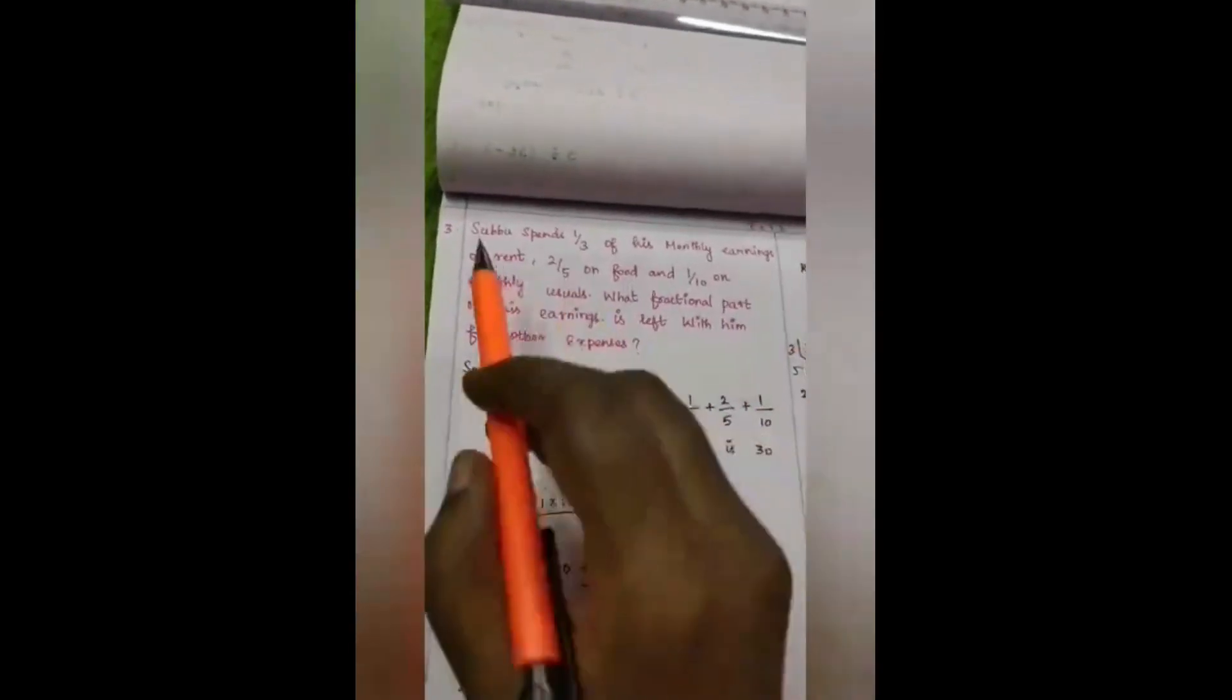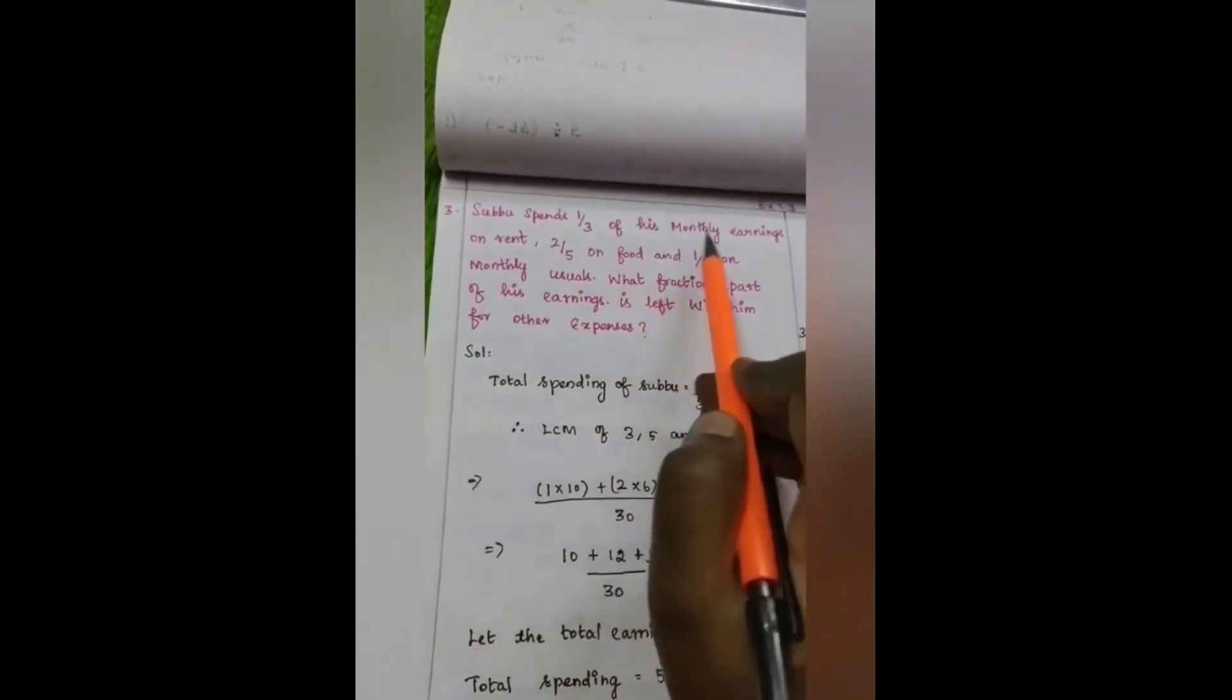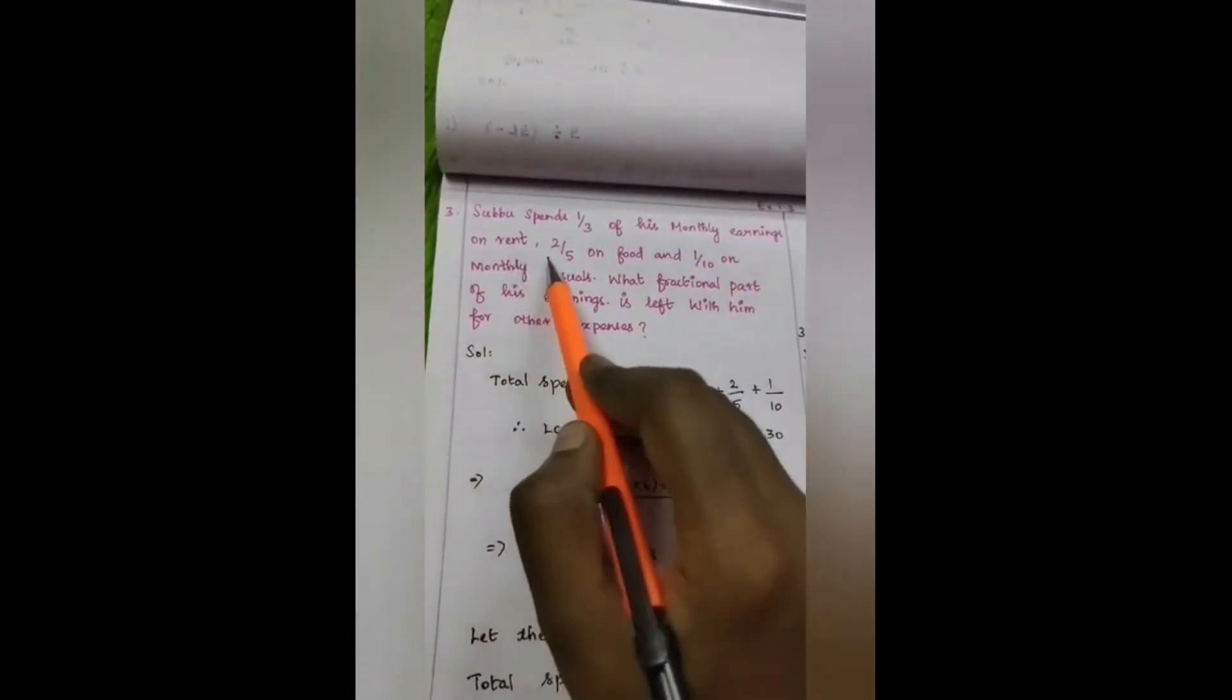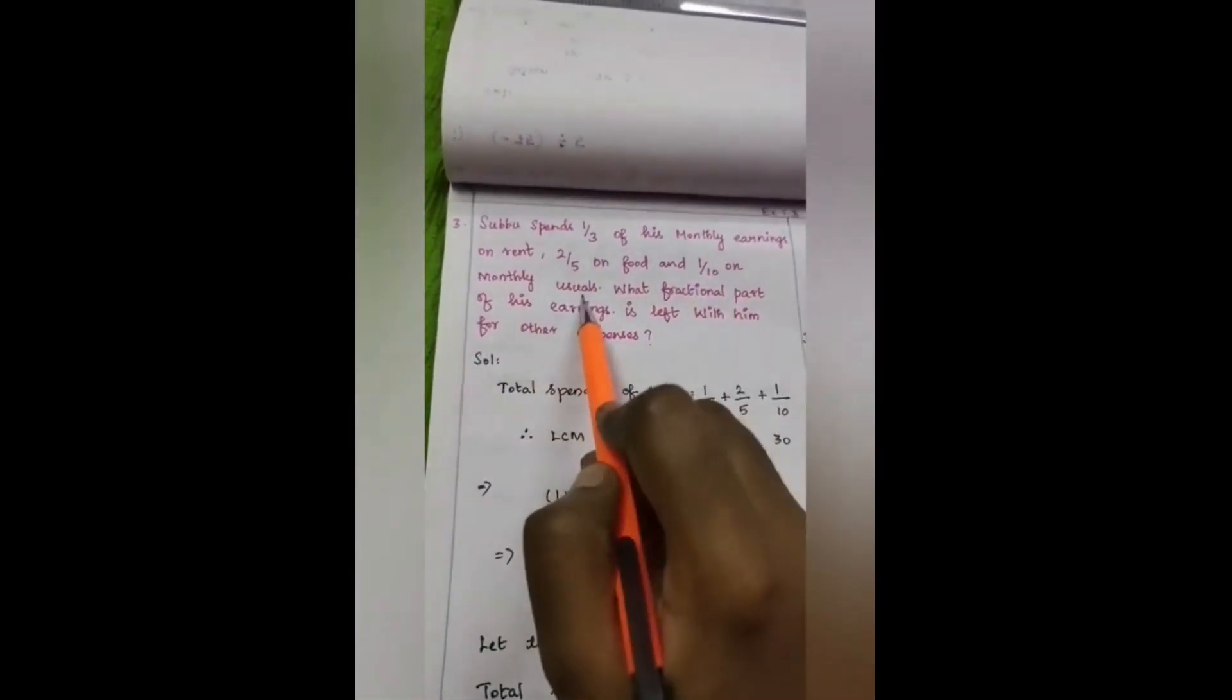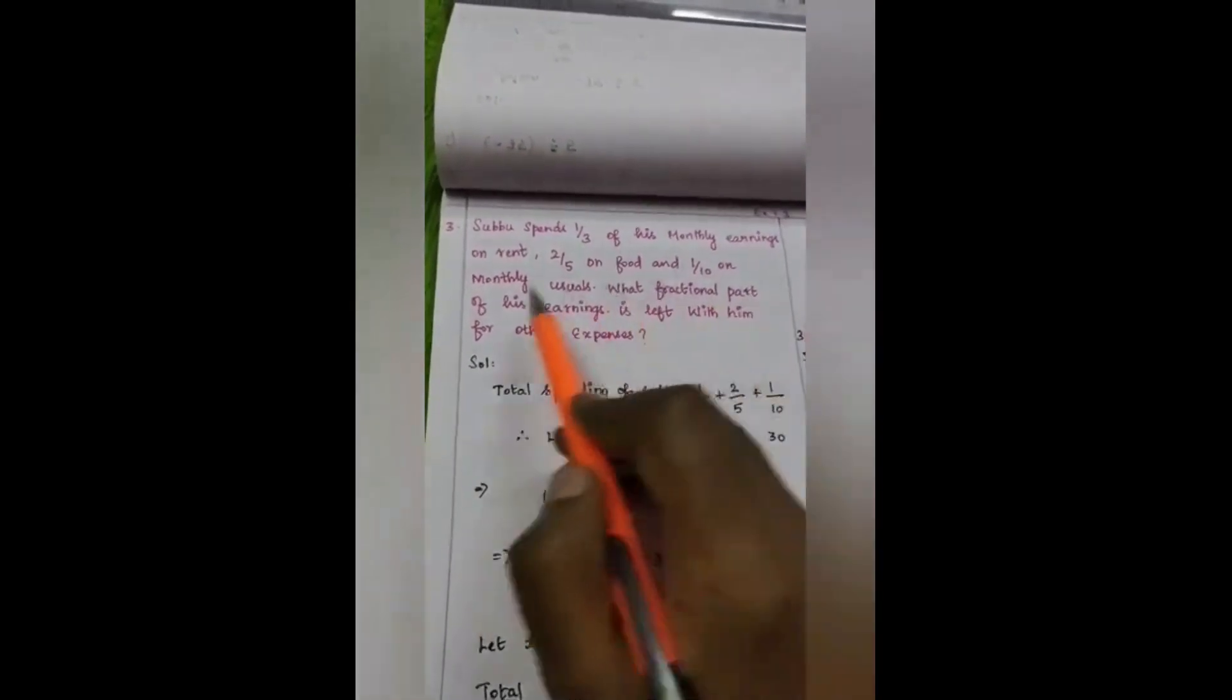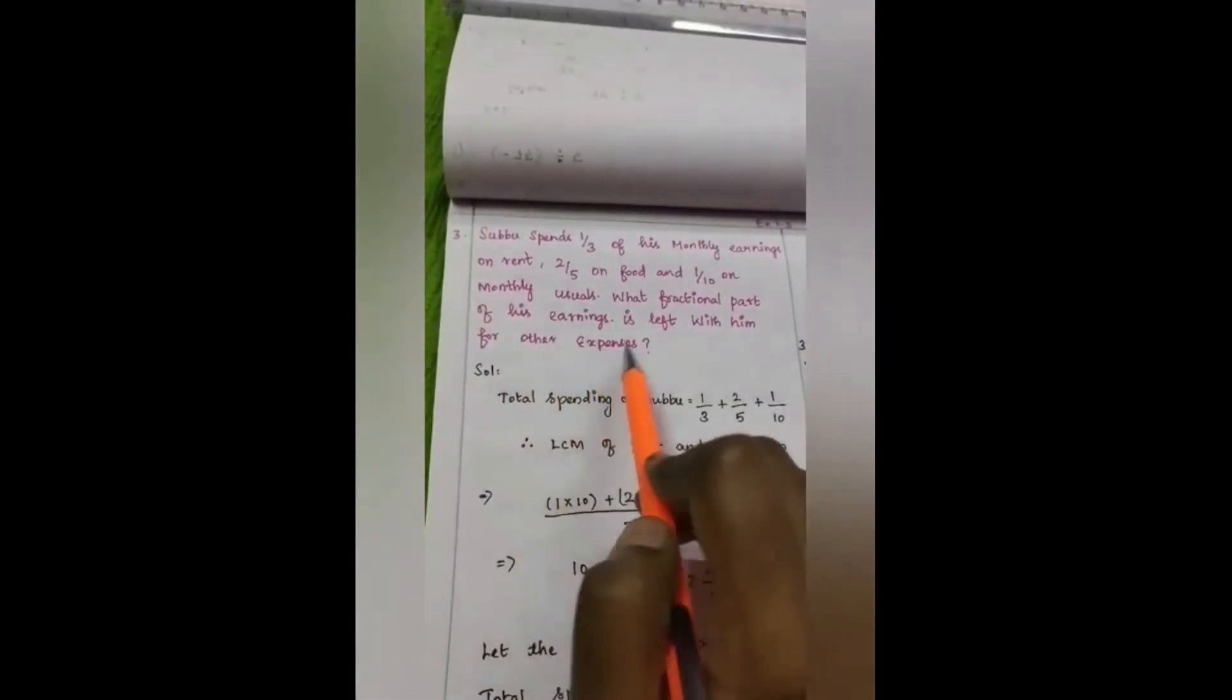Exercise 1.3, question number 3. Subbu spends 1 by 3 of his monthly earnings on rent, 2 by 5 on food and 1 by 10 on monthly usuals. What fractional part of his earnings is left with him for other expenses?